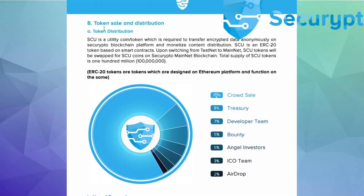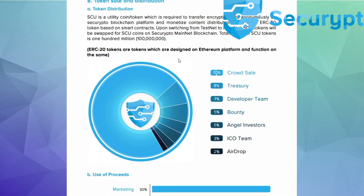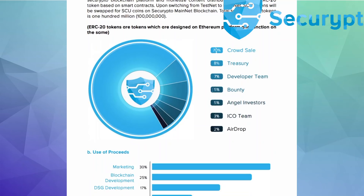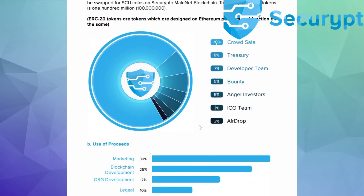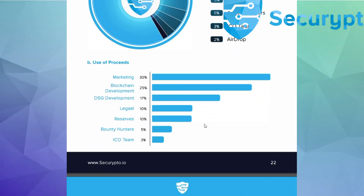Token chain and distribution — you can see on the screen right now: one hundred million total supply of SCU tokens. In the crowd sale, seventy percent will be sold out, five percent bounty reserve, two percent airdrop, and three percent for the ICO team.